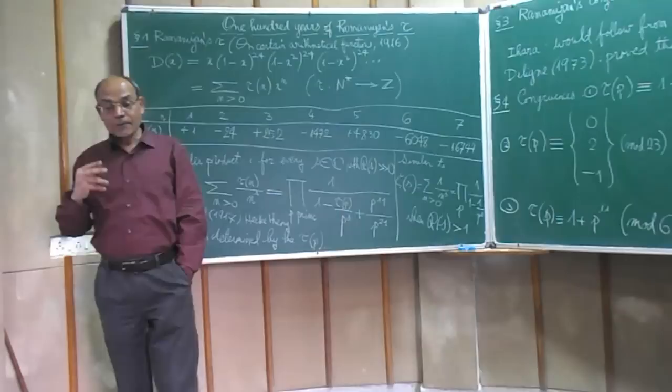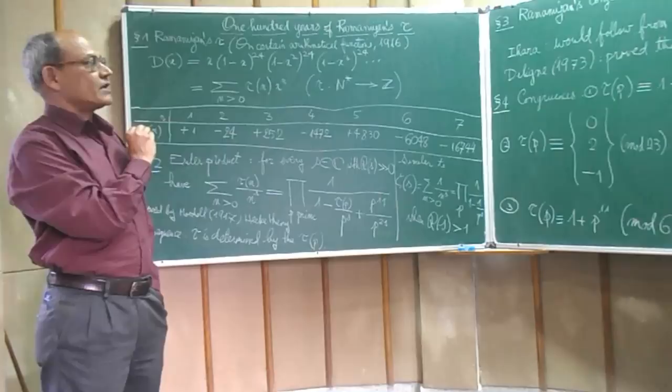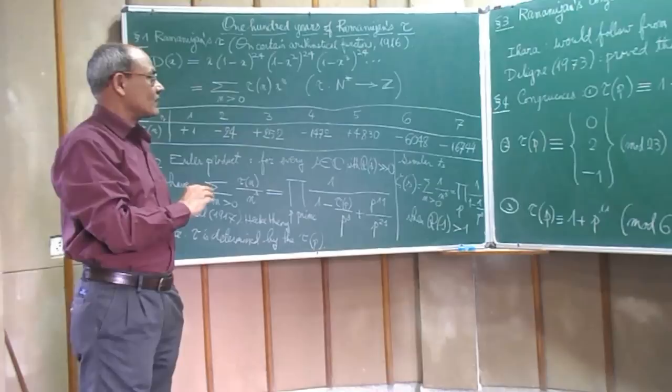Now the interesting thing is that Ramanujan made some observations about this tau function and he made some conjectures. And these have turned out to play an important role in the mathematics of the previous century.